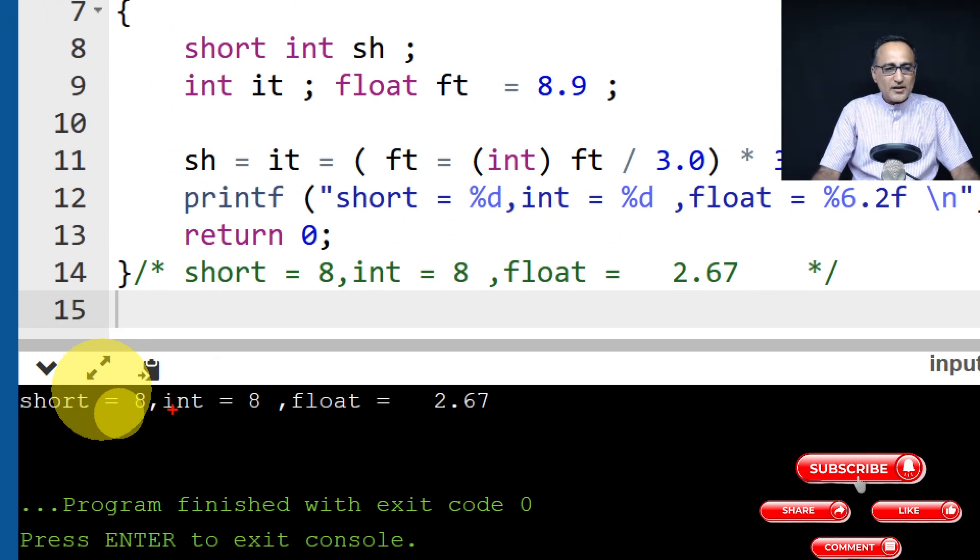So now if you see, short is 8, int is 8, and float is 2.67. As per expectation, float is 2.67 because I have forced float to be typecast as int. From 8.9 it has become 8. That's why you're seeing the value of this.